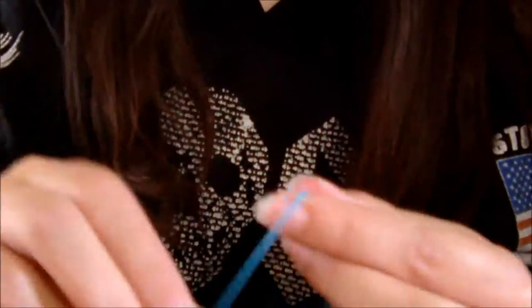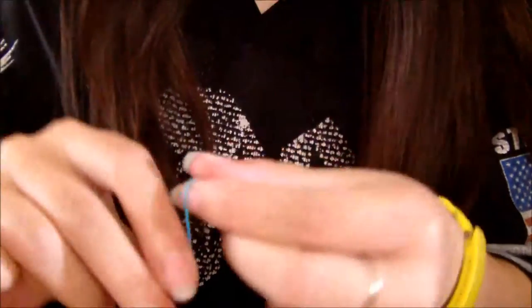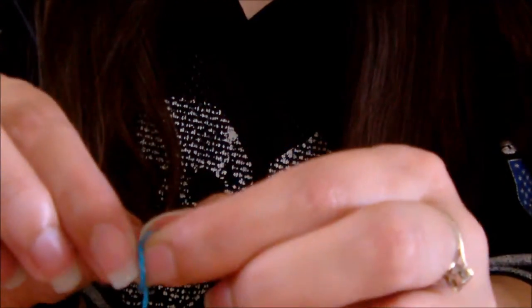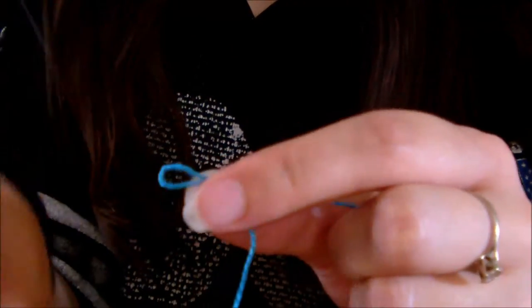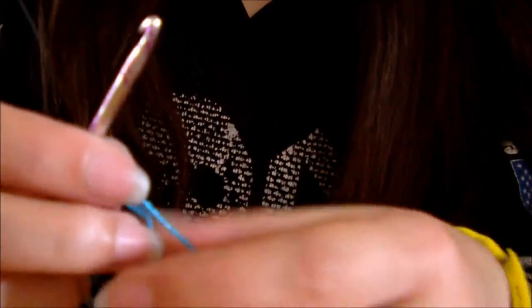Okay, so first of all, take your string or your yarn. You just want to make a little slip knot, so you just make a loop, and then you get the end part, pull it through the loop, and then you pull it tight. Yeah, you want quite a bit on the end of the tail, because you need it to sew onto the ring later on.